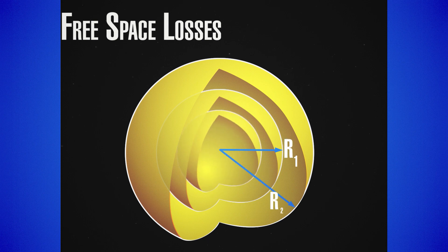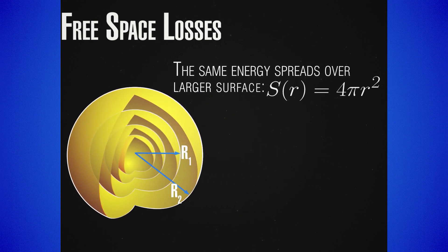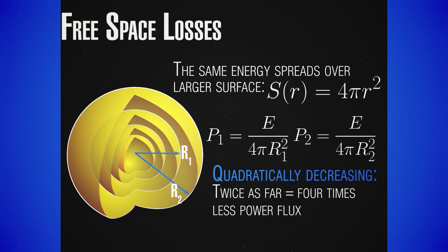The largest losses, specifically for space applications, are the free space losses. We saw previously that electromagnetic waves drop their intensity quadratically, which means that if you receive a given power flux from an antenna and you go twice as far, you will receive four times less power. So if we have an antenna which emits with a given power, how do we compute what amount of power will be received by an antenna some distance away?